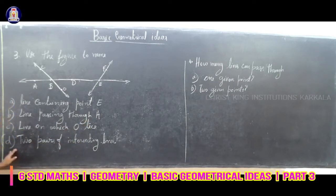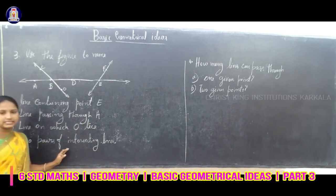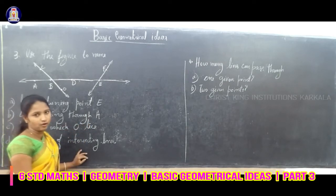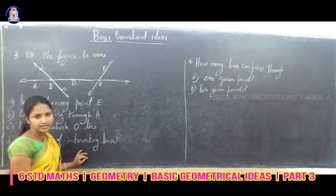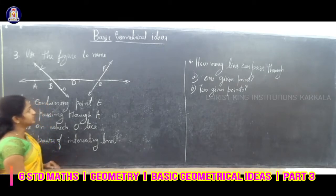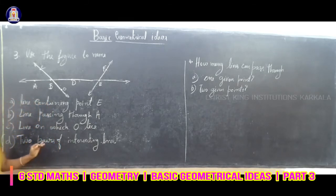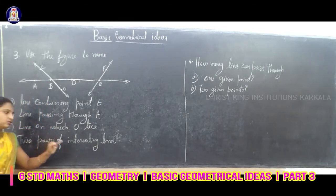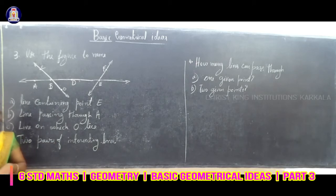Now the fourth question: two pairs of intersecting lines. How many pairs of intersecting lines are there? As already said, there are two pairs of intersecting lines.